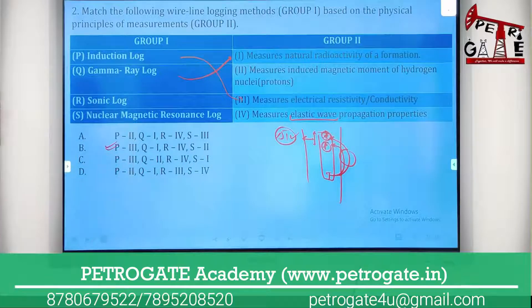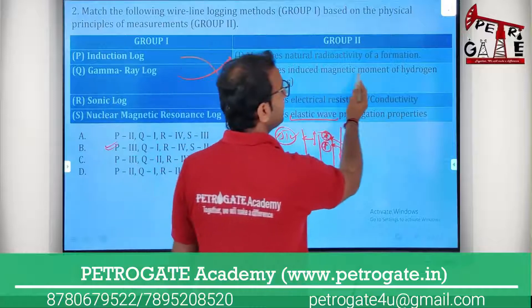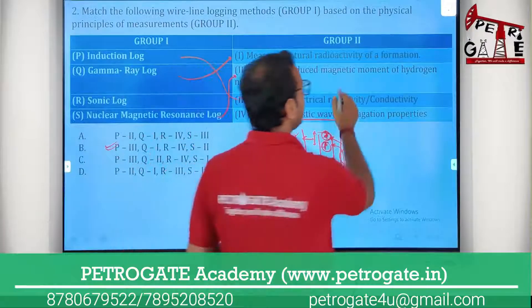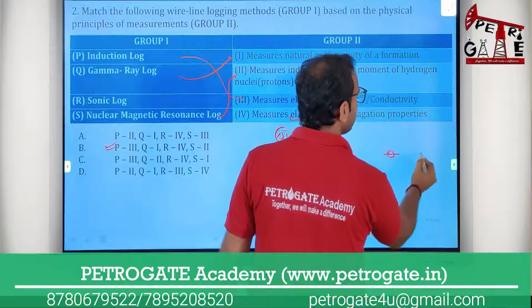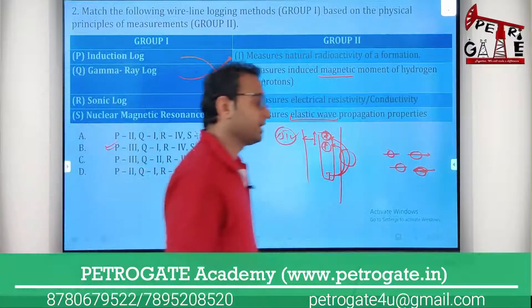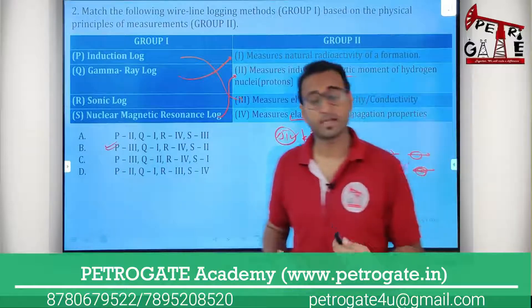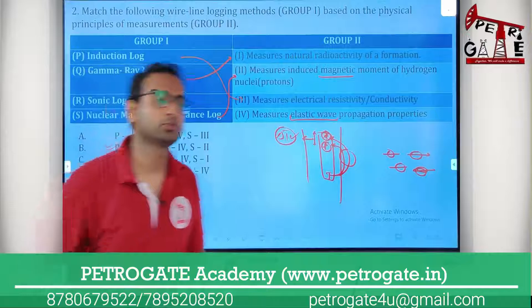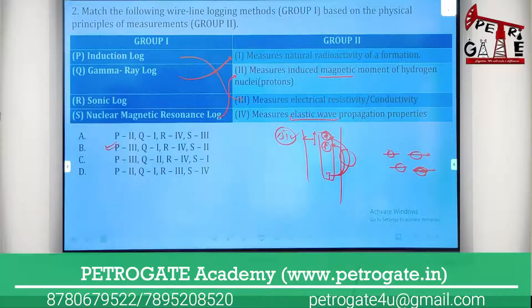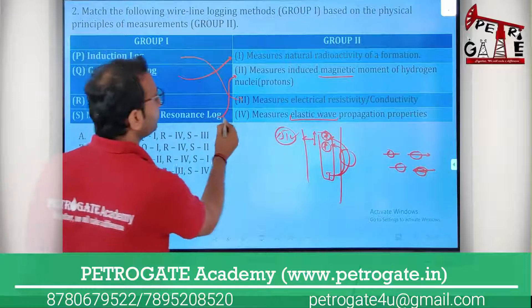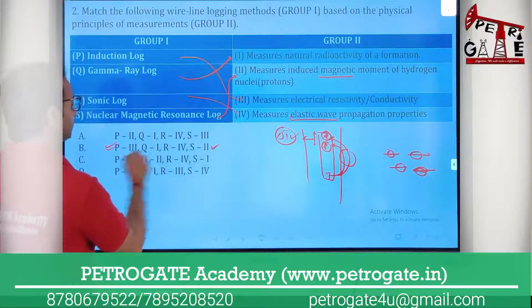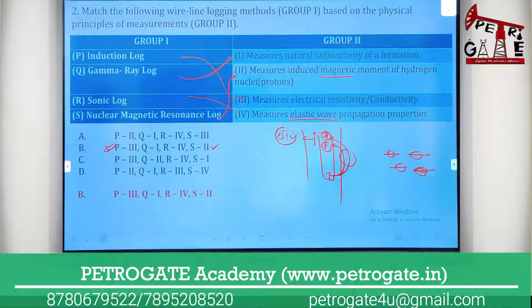Nuclear magnetic resonance measures the induced magnetic moment of hydrogen nuclei. A magnetic field is applied, hydrogen nuclei align in one direction, then an oscillating magnetic field is applied and the T2 relaxation time — how long it takes nuclei to return — is measured. So S goes to second and R goes to fourth. Option B is the right answer.